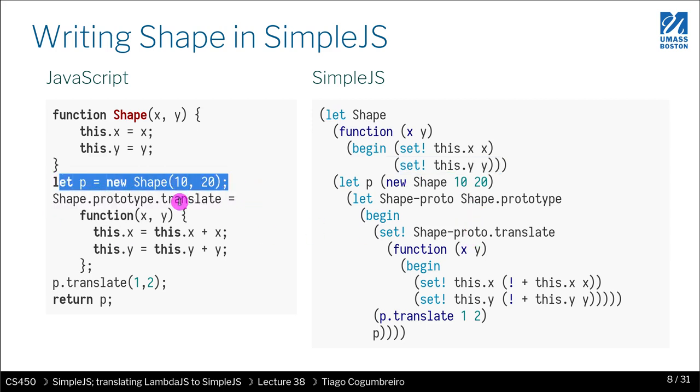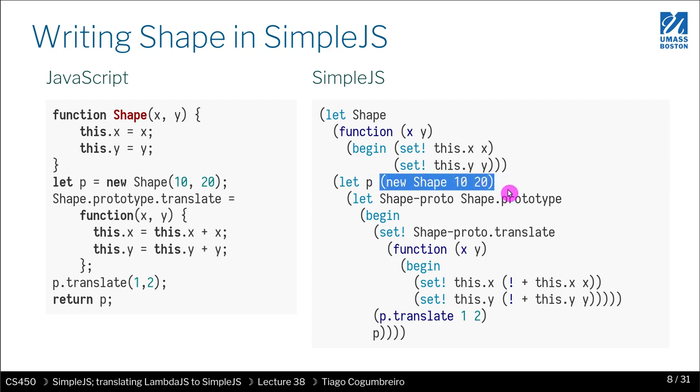Next we have this line where we're doing let p equals new shape. So we do let p equals new, and then the first parameter is the function constructor, which in this case is shape. Then there are two parameters, 10 and 20, passed after. This is the syntax of new, where this is not optional, but the arguments are optional, it could have zero parameters.